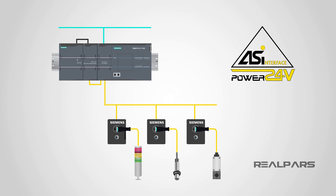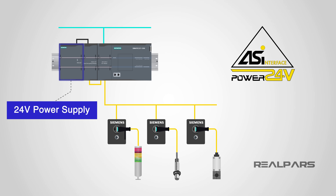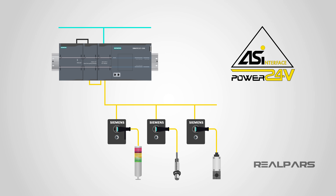Then we have ASI Power 24 volts. We know that the AS Interface can carry both power and data on the same cable, so you might be wondering what ASI Power 24 volts does differently. What it does is utilize standard 24 volt power supplies, meaning that the 30 volts DC power supplies are not needed. This type of device works well in small systems, because the distance the power and data can travel is reduced to around 50 meters, but it can maximize cost savings by not having an additional power supply to purchase and the required space to house it.